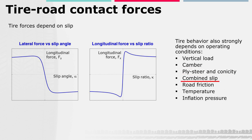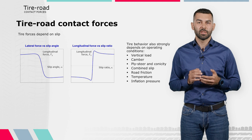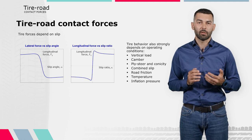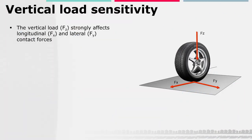Additional operating conditions include the presence of combined slip, road surface condition, temperature, and inflation pressure. The aim of the present lecture is to give an insight about the effect of these operating conditions on tire behavior. The vertical load Fz strongly influences the tangential forces Fx and Fy developed at the tire-road interface and therefore the vehicle dynamics.